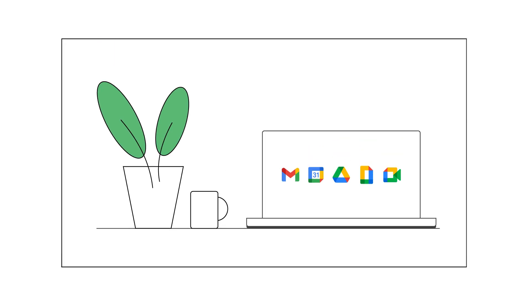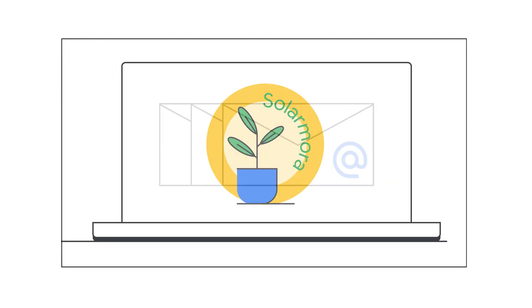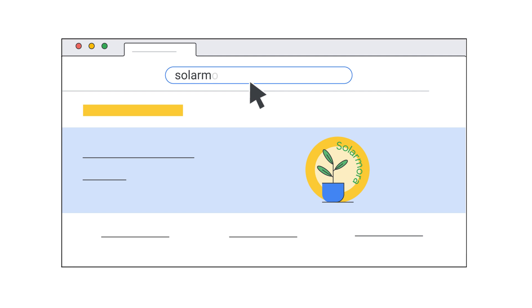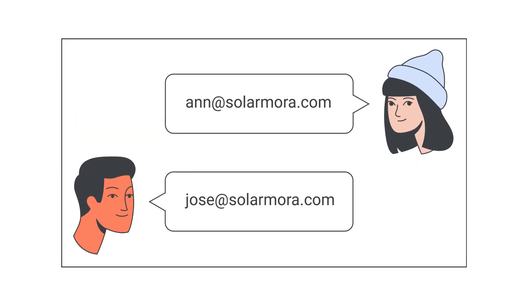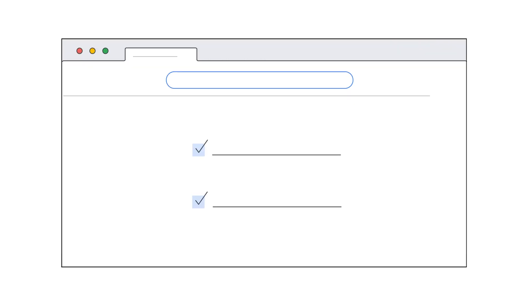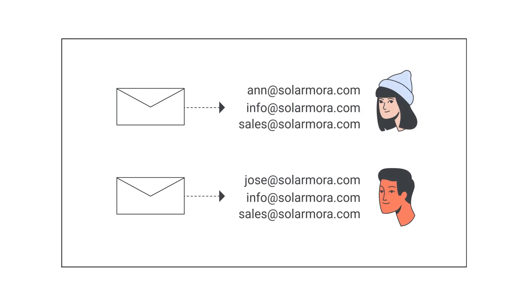When you sign up for Google Workspace, you get email addresses that use your domain. So, if your company owns the domain name solarmora.com, you get email addresses that use at solarmora.com. You can also set up team mailing lists that use your domain name. Messages to users in the mailing list arrive in each person's Google Workspace mailbox.